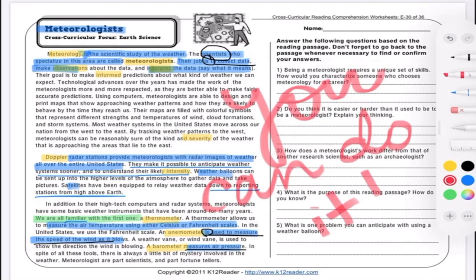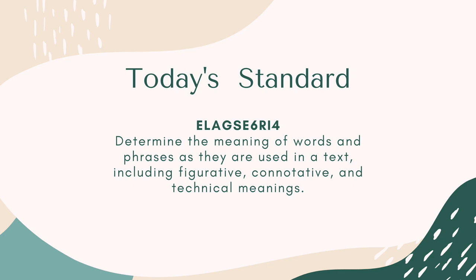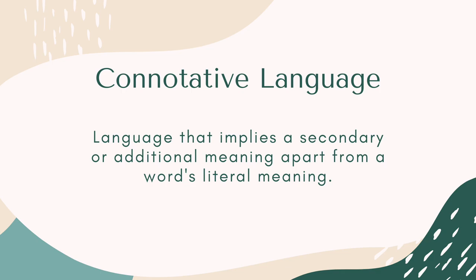Let's go back to our standard — RI.4: determine the meaning of words and phrases as they are used in a text, including figurative, connotative, and technical meanings. Connotative meaning refers to a meaning that is implied and not specifically stated; connotative language is often conveyed by the tone of the speaker. We saw connotative language in Sonnet 18 by William Shakespeare — when Shakespeare says 'Shall I compare thee to a summer's day,' we know that the summer's day has a connotative meaning of something pleasant and beautiful, even though the words 'beautiful' and 'pleasant' are not actually used in that stanza.